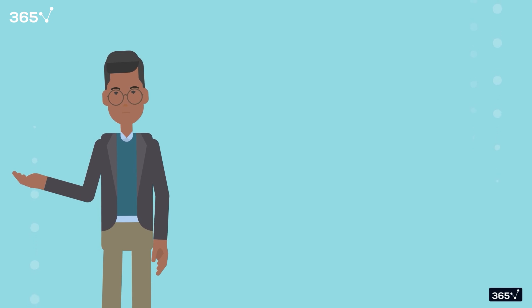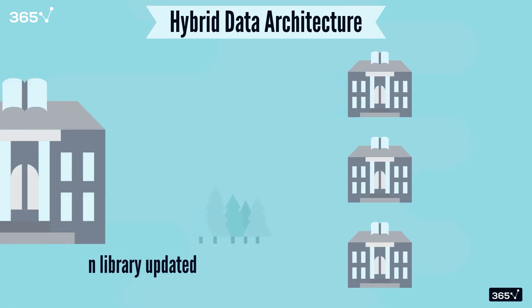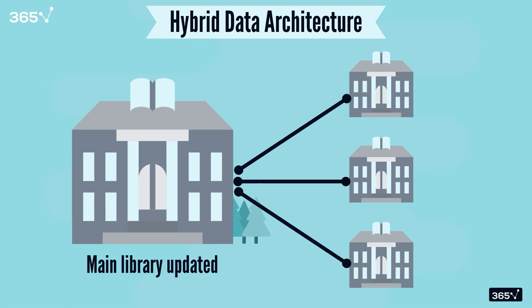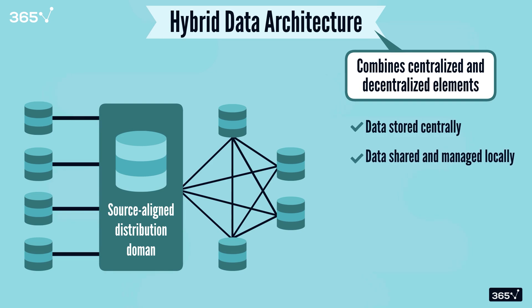That brings us to a solution often considered the best of both worlds: hybrid architectures. Imagine those neighborhood libraries being connected to a central system — they manage their own collections, but also send updates to the main library, keeping everyone in sync. Hybrid architectures combine centralized and decentralized elements, allowing data to be stored centrally but also shared and managed locally as needed. The hybrid approach can solve problems faced by both architectures by balancing performance and consistency, and offering more flexibility in securing and governing data systems.